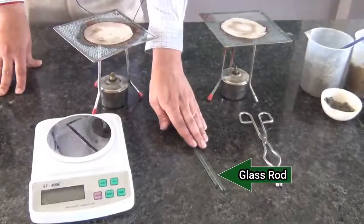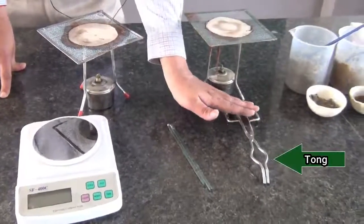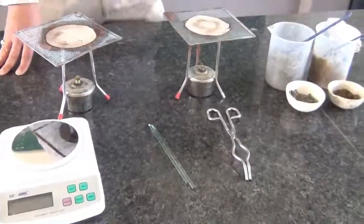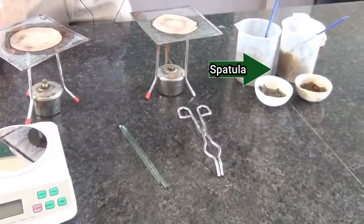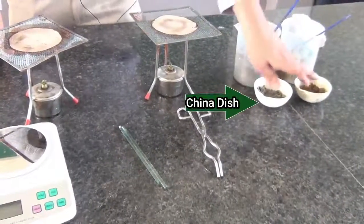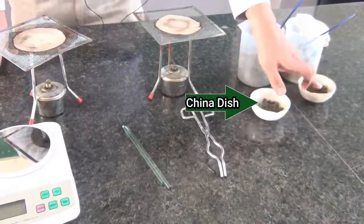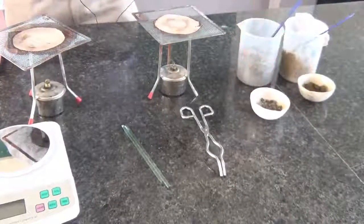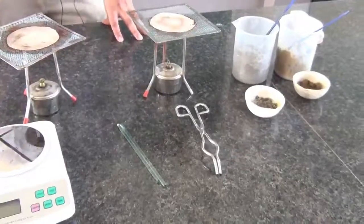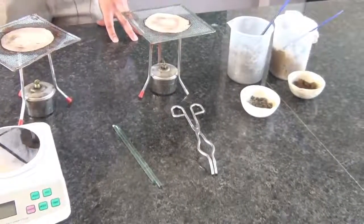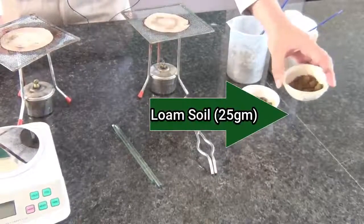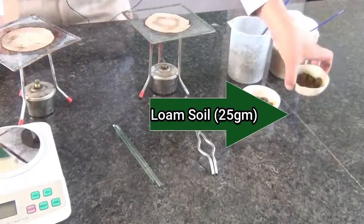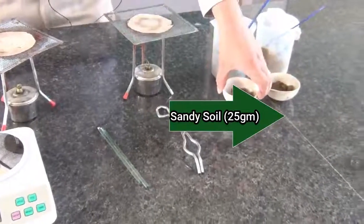Wire gauze, tripod, spirit lamp, glass rod, tongs. Then in this beaker soil samples are present. Naturally spatula is present. China dish is available and in that china dish 25 grams of soil has been kept. There are two soil samples. In this one the loamy soil is kept and in this one the sandy soil is kept.